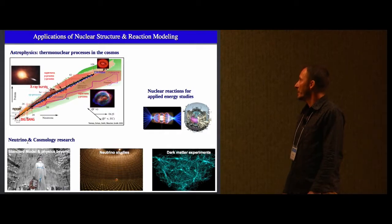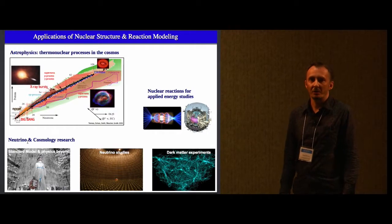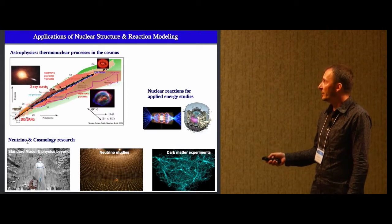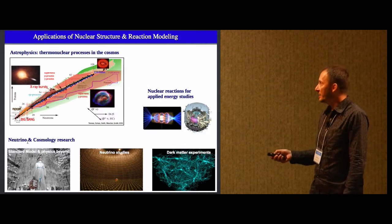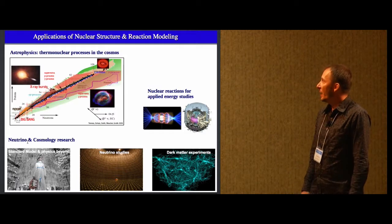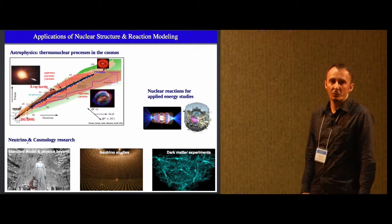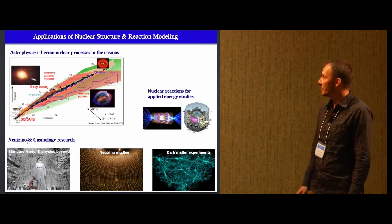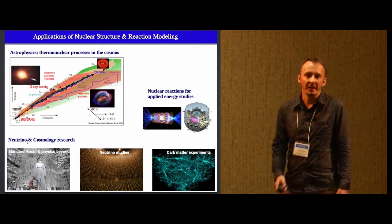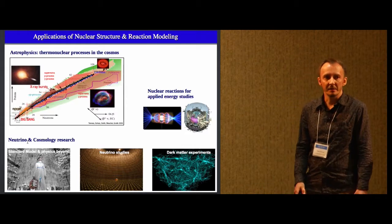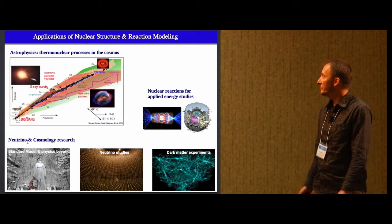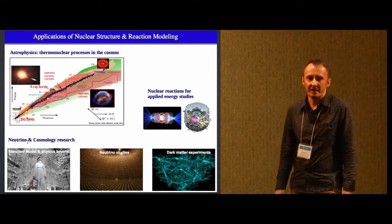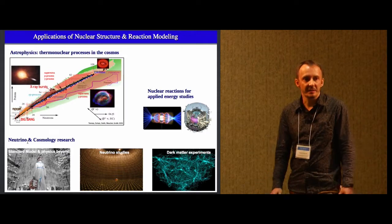Here I just depicted the applications for nuclear modeling. The first big area, of course, is astrophysics. You can see the chart of all nuclei that we know along with processes that lead to their nuclear creation. Then another important field where high precision nuclear input is needed is research on neutrino and cosmology research. For instance, studies that are looking for physics beyond the standard model are relying on nuclear information. And then there is a little bit more practical application, which is the field of applied energy studies. So this would be National Ignition Facility in Lawrence Livermore.